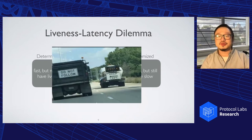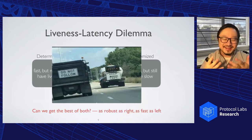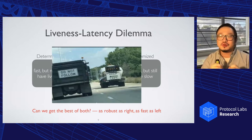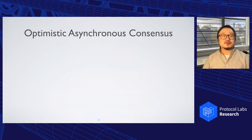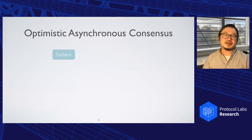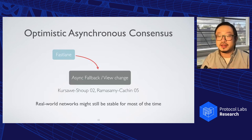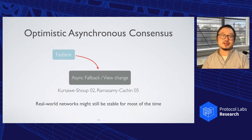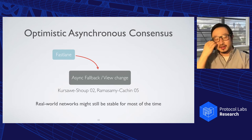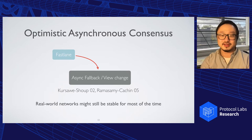So in the next few minutes I'm trying to answer the following question: can we design an asynchronous protocol that could be as fast as the state-of-the-art deterministic protocol? This brings out another nice notion of optimistic asynchronous consensus. The basic idea is very intuitive: in the good case, we run the fast deterministic protocol as a fast lane; when things go wrong, we run an asynchronous fallback. This notion was actually proposed many years back, and Cachin again played a vital role in this line of work.